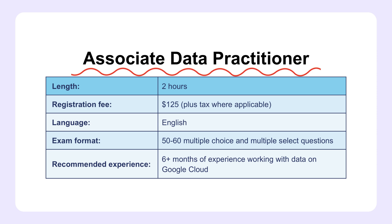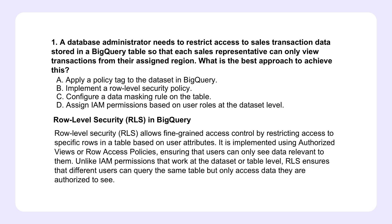Let's kick things off with a scenario from question one. Imagine a sales team that really needs to access sensitive transaction data, but they should only see the data from their specific region. What's the best way to keep things secure but still accessible? This is where row-level security comes in, or RLS. Think of it like a really good security guard for your database — it makes sure each user only sees the data relevant to their role and region. This is crucial for protecting sensitive information and complying with data privacy regulations like GDPR. It's not just about locking things down; it's about empowering people with the right data while minimizing risks.